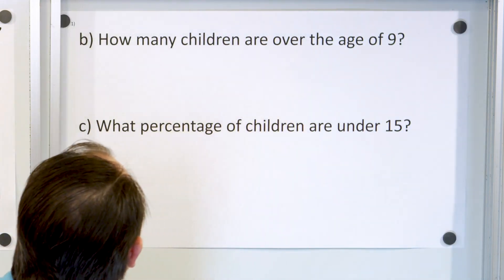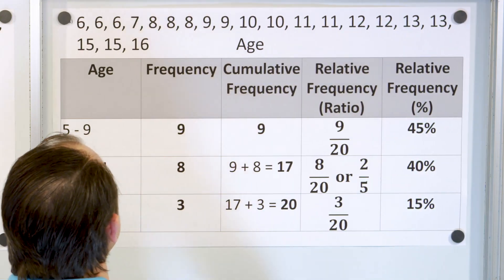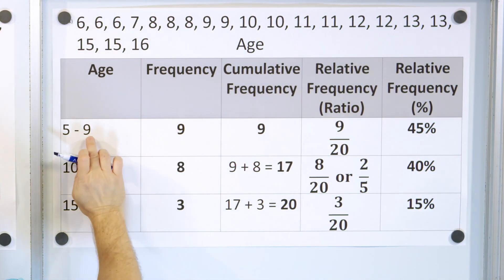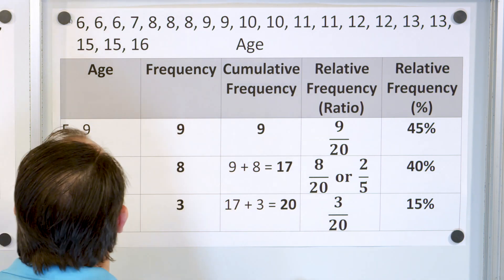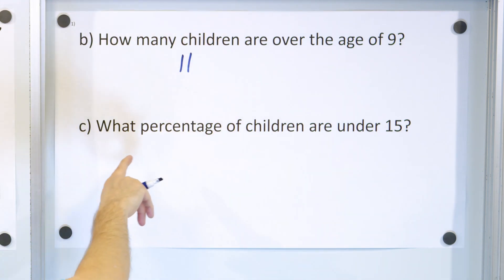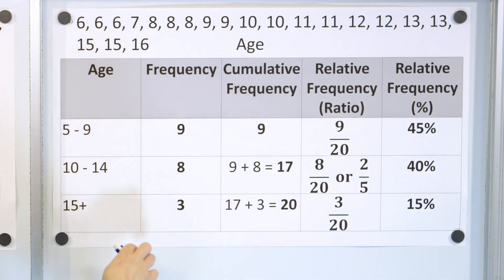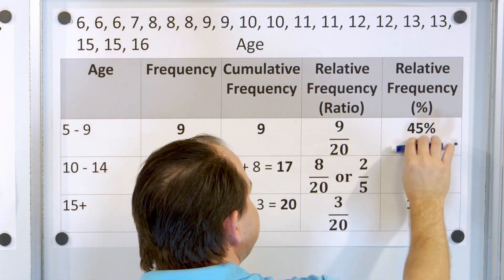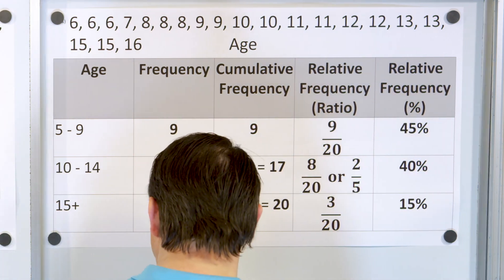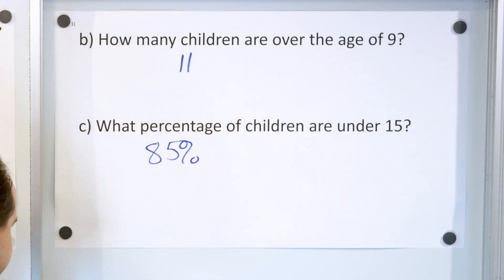Now let's take a look at problem number one. How many children are over the age of nine? Over the age of nine means larger than nine. We don't count this because this is up to and including nine. Older than nine are here. So eight plus three is 11. So 11 kids are older than nine. What percentage of children are under 15? Under 15. That means anybody over here. So not 15 plus, under 15. So 45% plus 40%, you add those together and you get 85% are under 15.